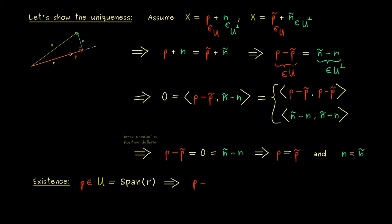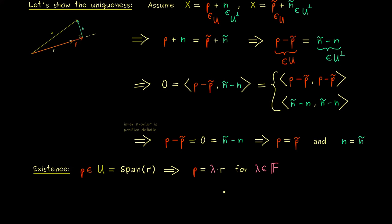So p can be written as λ times r. Therefore the question is: what is this scalar λ from the field F? And now to get this, to get a formula for λ, we should start with the two ingredients we have from the beginning, namely we have the vector x given and the vector r. And if we recall our boat on the water picture, we know that the angle between r and x is important.